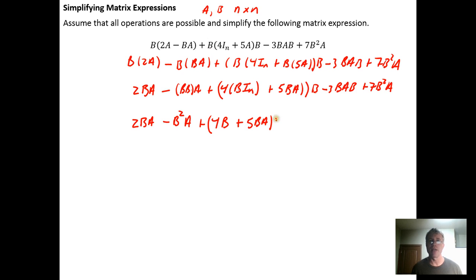It's going to be plus 5BA. We have the B out here that still needs to be distributed, minus 3BAB plus 7B²A. Now we want to look and see can anything be simplified yet. Here we have minus B²A plus 7B²A.